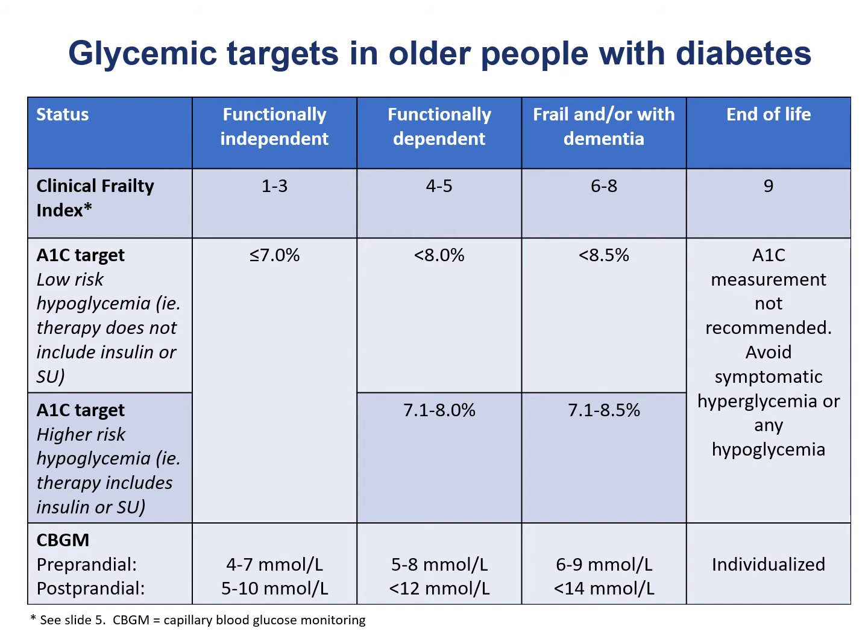Finally, at the end of life, A1c measurement is not recommended. You should avoid symptomatic hyperglycemia or any hypoglycemia.